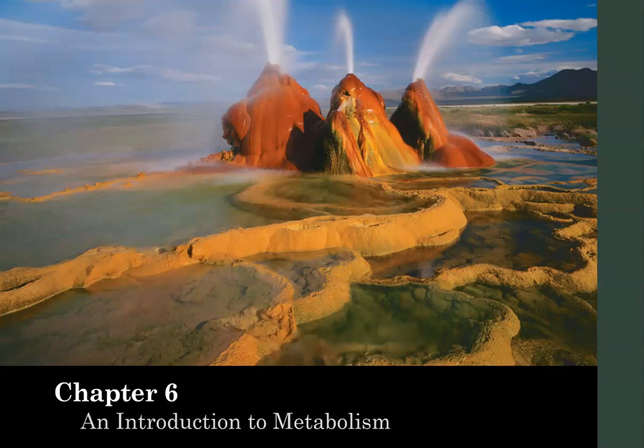Our remaining chapters in Unit 2 focus on energy and how cells transform and use that energy. Chapter 6 specifically focuses on the kinds of reactions that happen in our cells, our energy-storing molecule ATP, and enzymes, which are molecules that regulate chemical reactions.